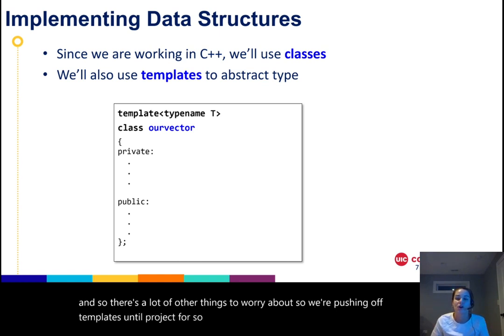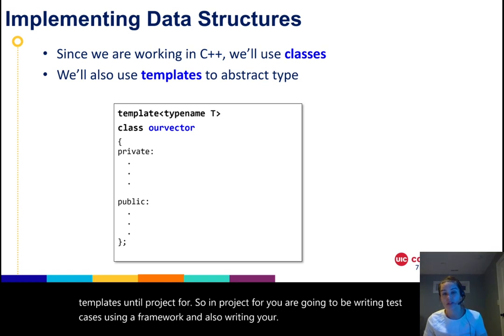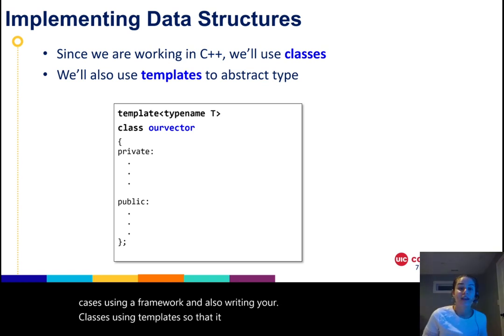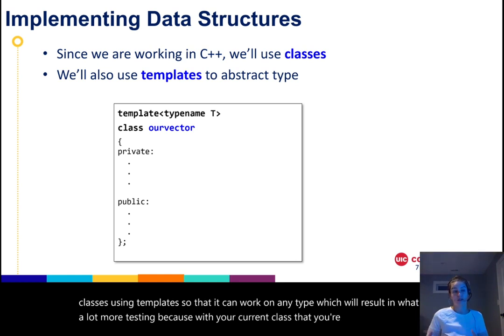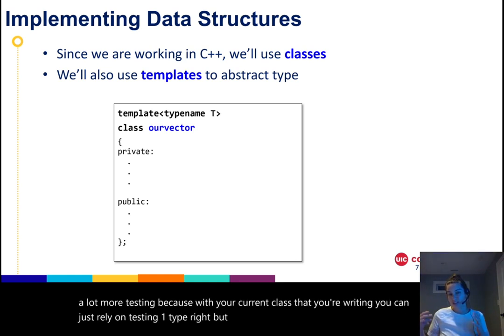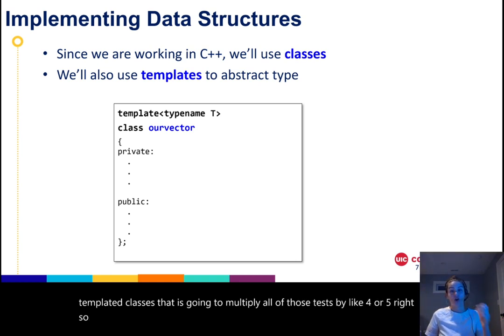So we're pushing off templates until project four. So in project four, you are going to be writing test cases using a framework and also writing your classes using templates so that it can work on any type. Which will result in what? A lot more testing because with your current class that you're writing, you can just rely on testing one type. But then once you start moving towards templated classes, that is going to multiply all of those tests by like four or five so that you can test against all types.